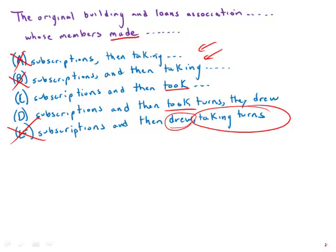Both of them construct the parallelism correctly. But in D, what we have is then they took turns comma, they drew on the funds for home mortgages. So we have a comma, and then we have another independent clause with a noun and a verb.